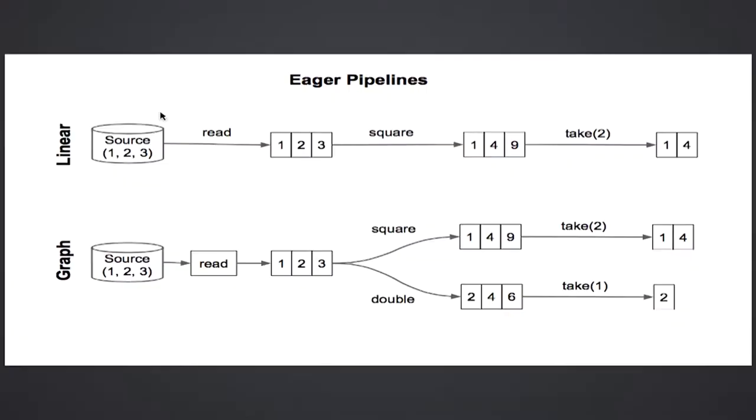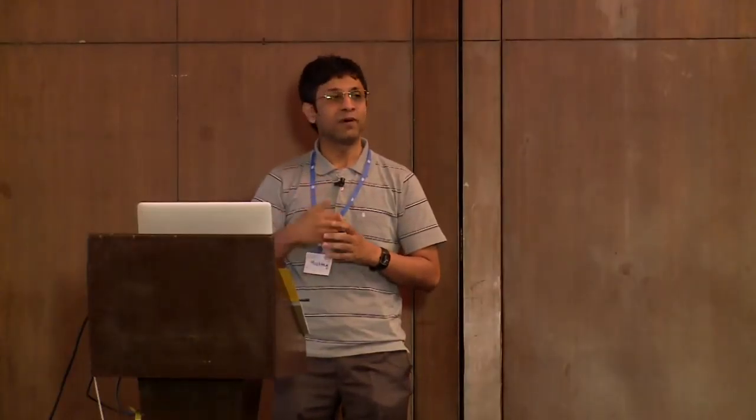One advantage of keeping things in memory is that reasoning about complicated graphs, which will naturally emerge as you program, is very simple. For example, in the second stage, if after reading from a file you wanted to do two operations — squaring all the numbers and doubling all the numbers — you just pass this collection to two different functions. You're not reading twice; it's in memory, you just share it. It's immutable, so you're free to share it. Easy to reason about, at the cost of getting everything in memory.